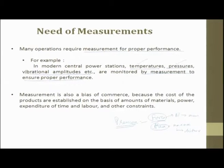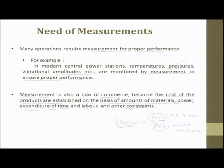Measurement is also a basis of commerce because the cost of products is established on the basis of amount of material, power, expenditure of time, labor, and other constraints. If measurement is done properly, we can work on tighter tolerances, and the amount of material consumed for making the same product can be reduced. Proper feeds or speeds can be set on the machine, so power goes down and expenditure of time and labor also goes down.